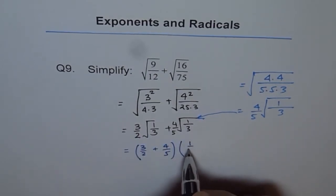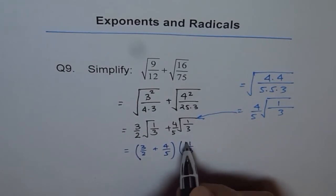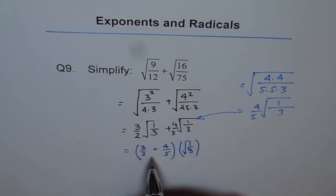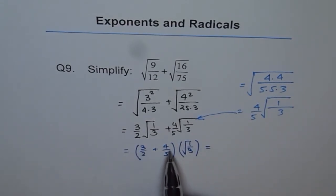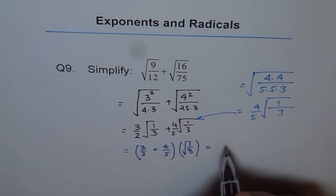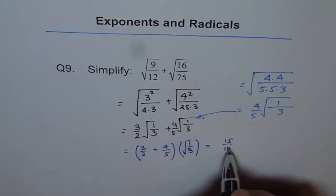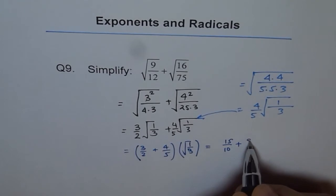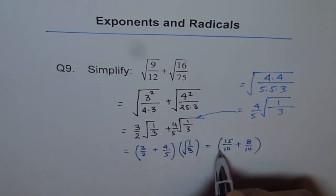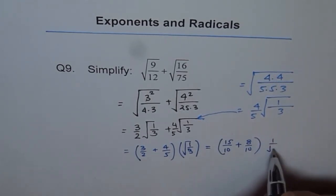1 over square root 3, which could also be written as this. So now you can add them. So how will you make them common denominator? You need to multiply this by 5 and that by 2.